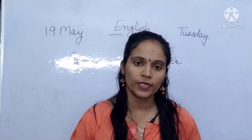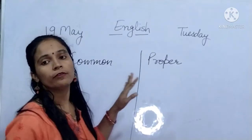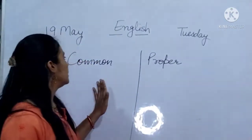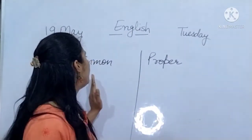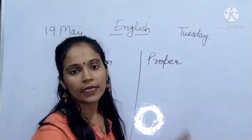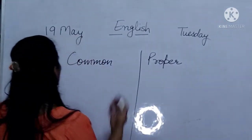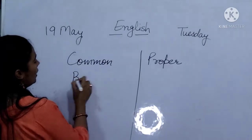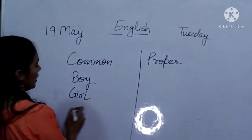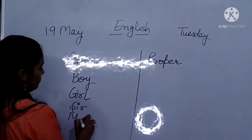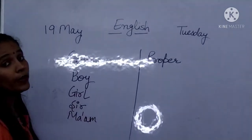So students, naming words are done. Here are the parts of naming words — that is common noun and proper noun. Common naming word — like you can say a boy, any girl, any sir, any ma'am. These are the common nouns.